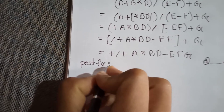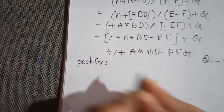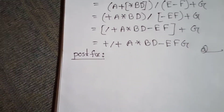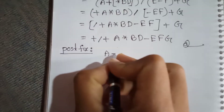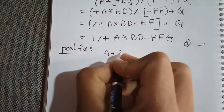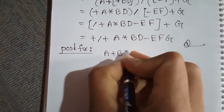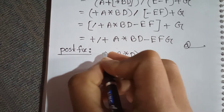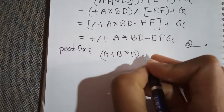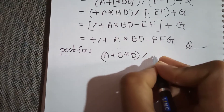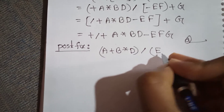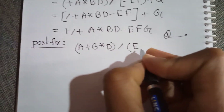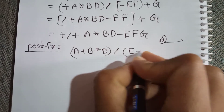Now for the postfix expression. We have the equation A plus B into D, first bracket division, bracket E minus F plus G.